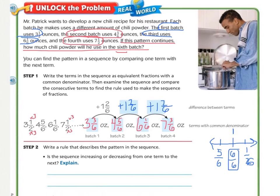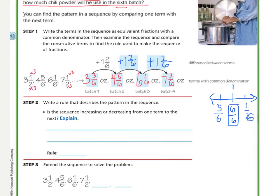So, once we have our pattern, we need to answer step 2. We need to write the rule for it. So, is the sequence increasing or decreasing? We can say that it is increasing, meaning that it is going up. And so, our rule is going to be add 1 and 2/6.